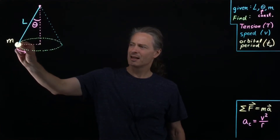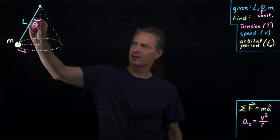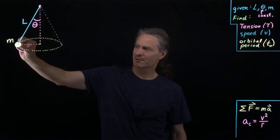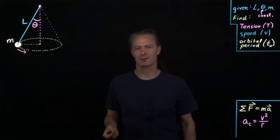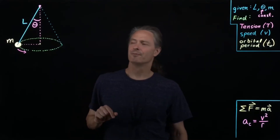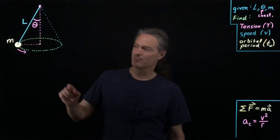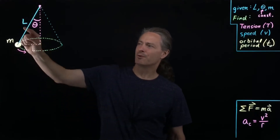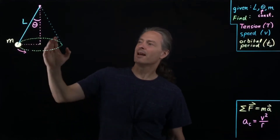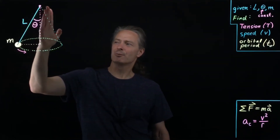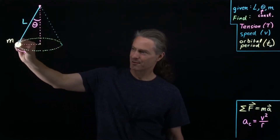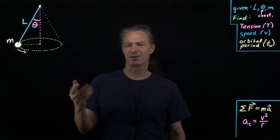Imagine we have a mass hanging by a really light string from some fixed point, moving in a circular path as shown. This configuration is known as a conical pendulum. If this is truly a circular path, then the angle theta between the string and the downward vertical direction will necessarily be constant.